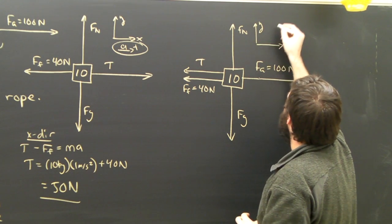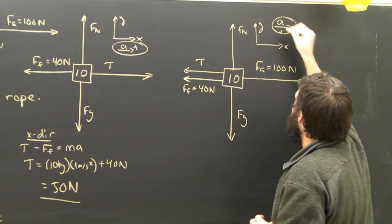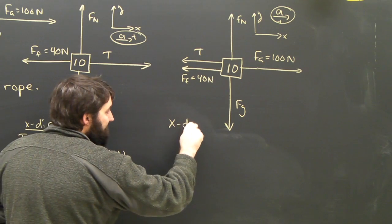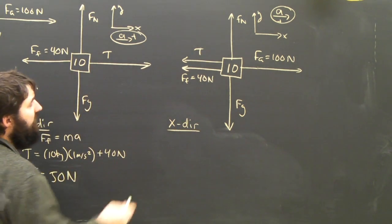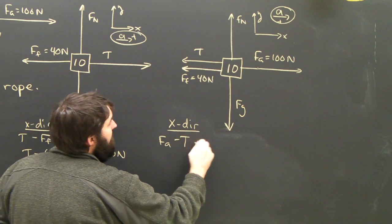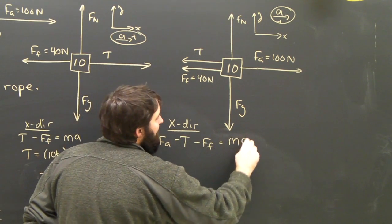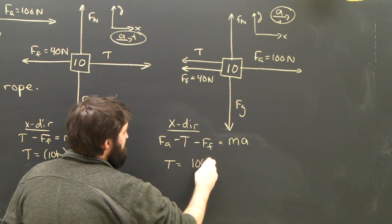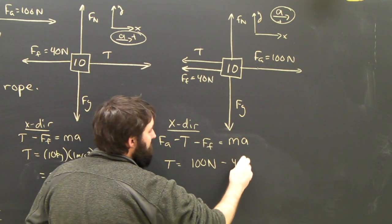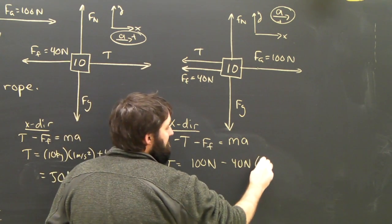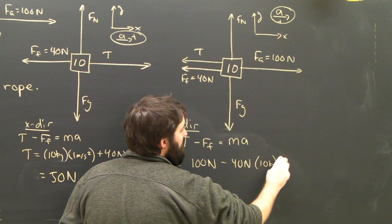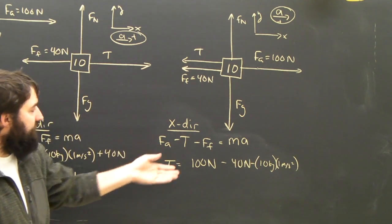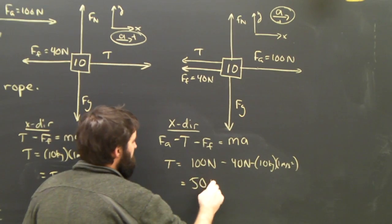The x-direction, the y-direction, the acceleration is to the right. I'll call that positive. Now, looking in the x-direction, we apply Newton's law again. Fa minus T minus Ff equals ma. Rearranging and substituting, I'll find that tension is equal to Fa, which is 100 newtons, minus the force of friction, which is 40 newtons, minus 10 kilograms times 1 meter per second squared, which is 10 newtons. 100 minus 40 minus 10 is, lo and behold, 50 newtons.